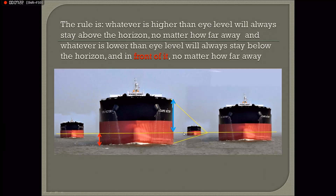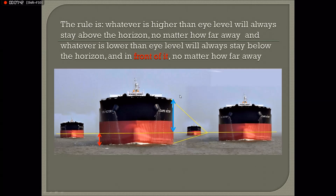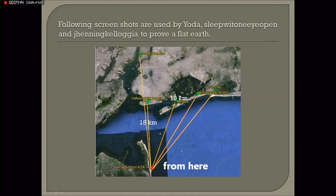Therefore we can now define: if part of an object far away disappears below the horizon and is no longer visible, then there must be a globe. This definition is clearly demonstrated in a number of examples.